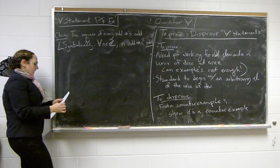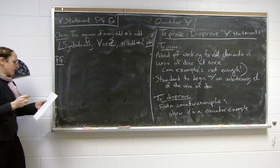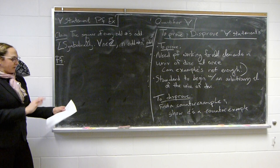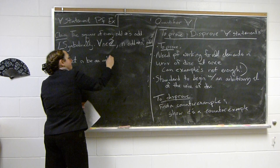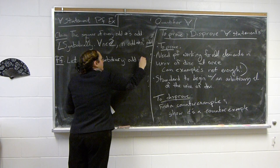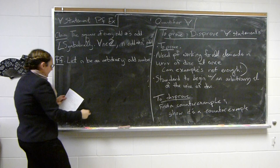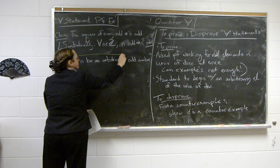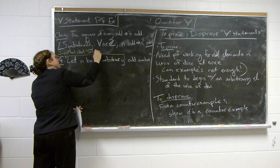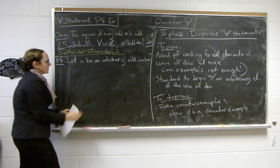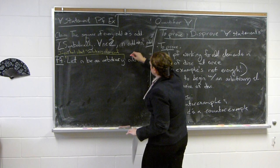Proof. As we said, we want to start with an arbitrary element in our universe of discourse, making sure to specify the universe of discourse. So let n be an arbitrary odd integer. It's important that we start with an arbitrary element because this is a 'for all' statement, and we need to clearly state our universe of discourse.